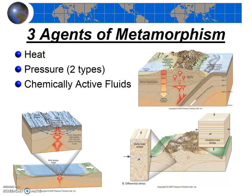One final point about these three agents of metamorphism: all three are likely to occur only pretty deep within the Earth. So very deep within the Earth is the only place where you're going to have the extreme temperatures and pressures needed for metamorphism. Thus, if you see a metamorphic rock exposed at the Earth's surface, you know there's probably been a lot of erosion to remove the overlying materials.